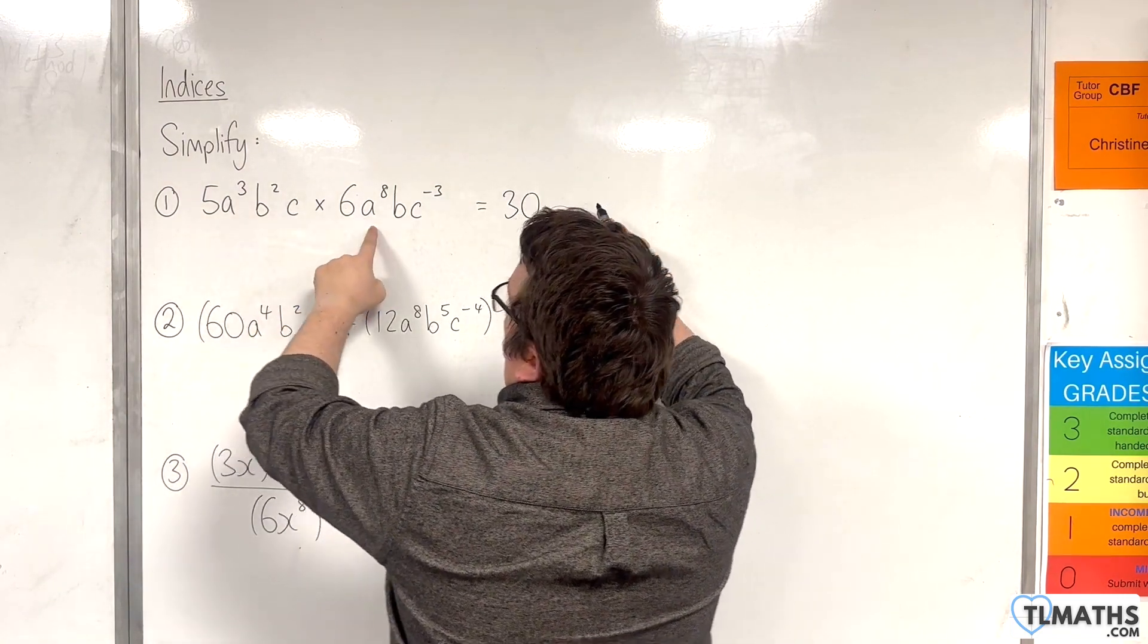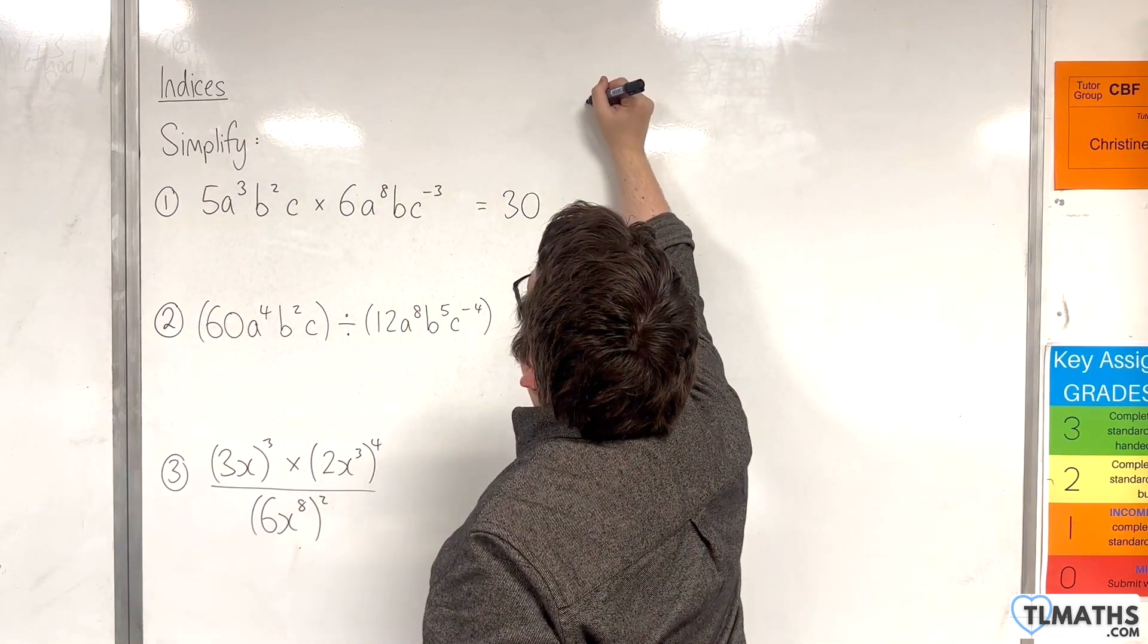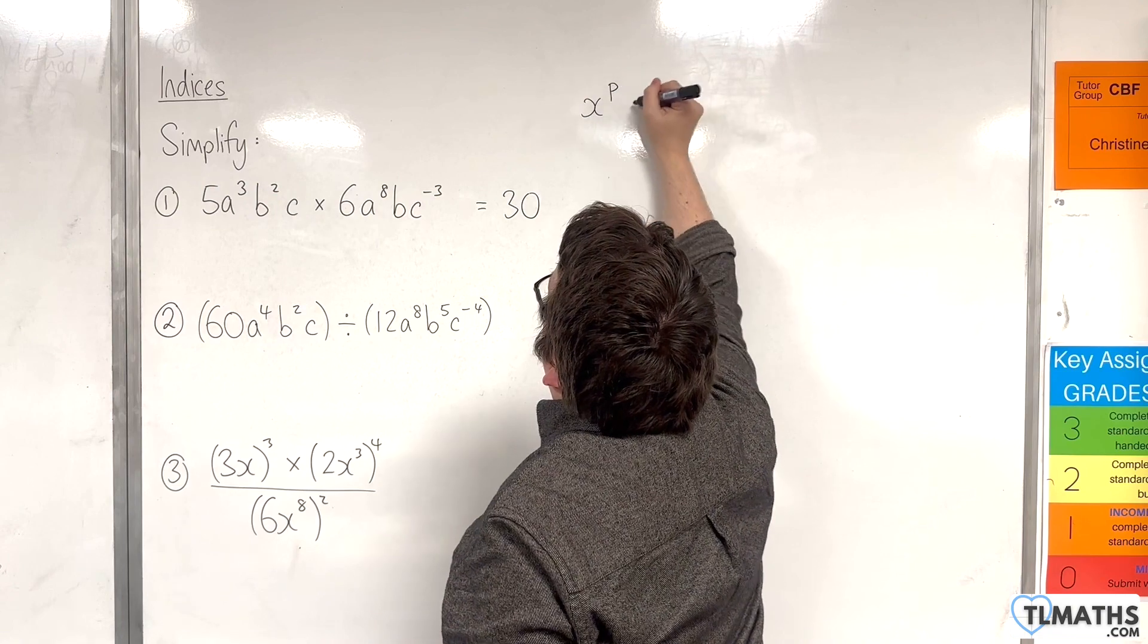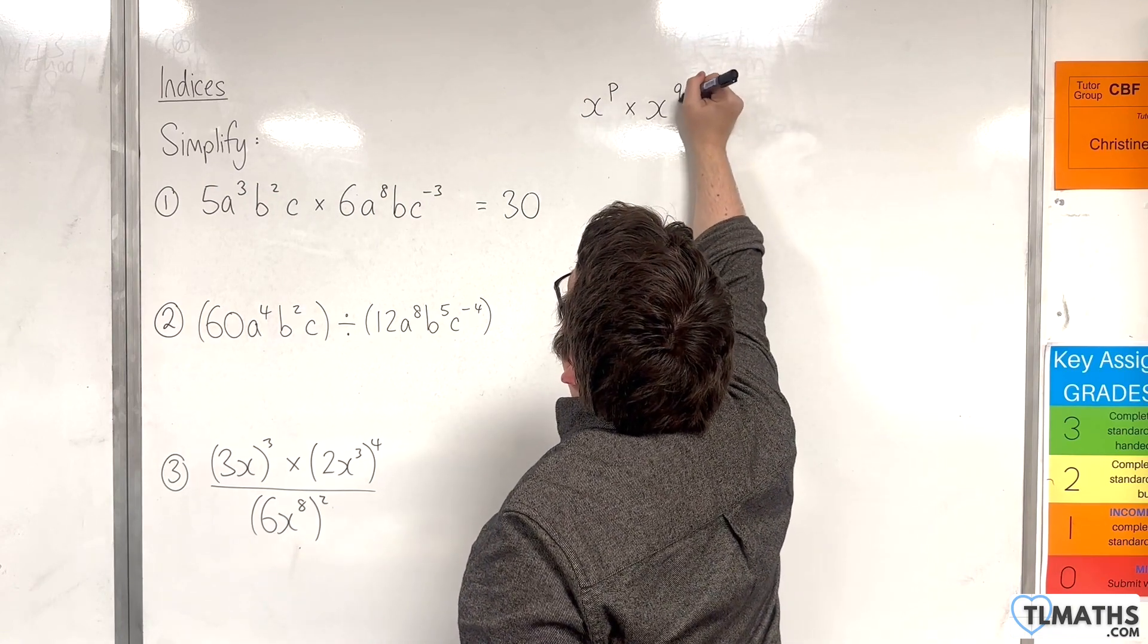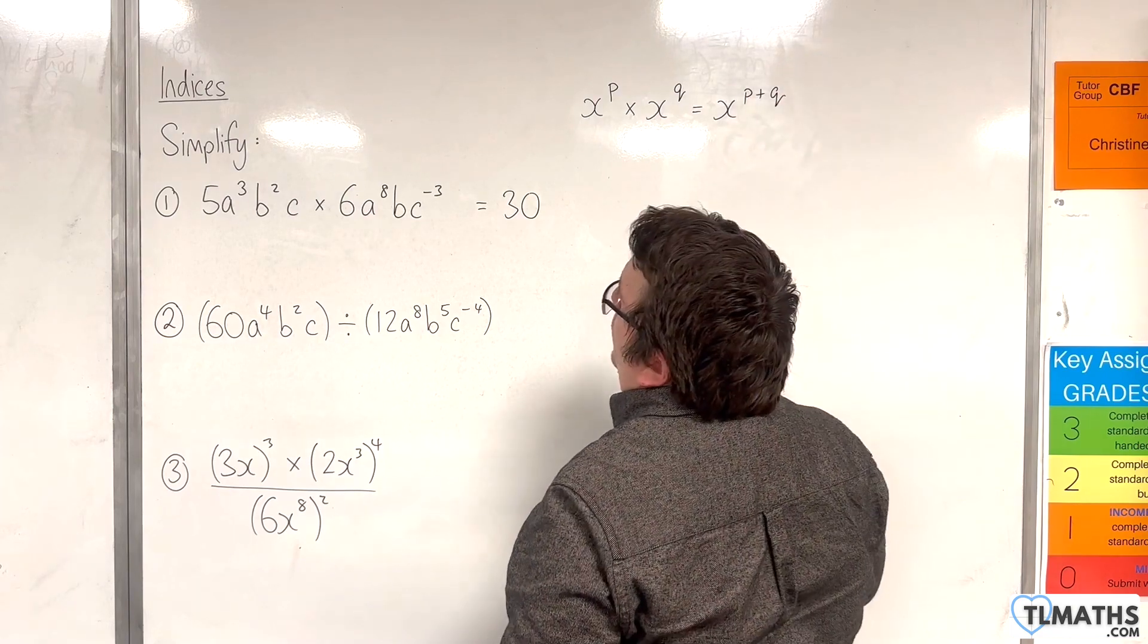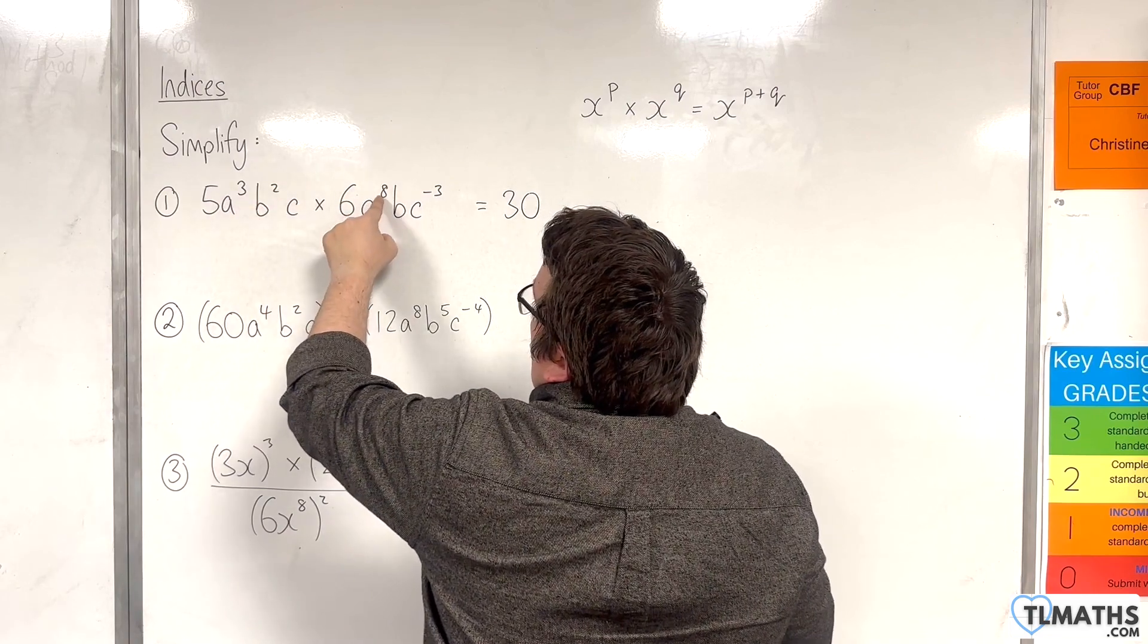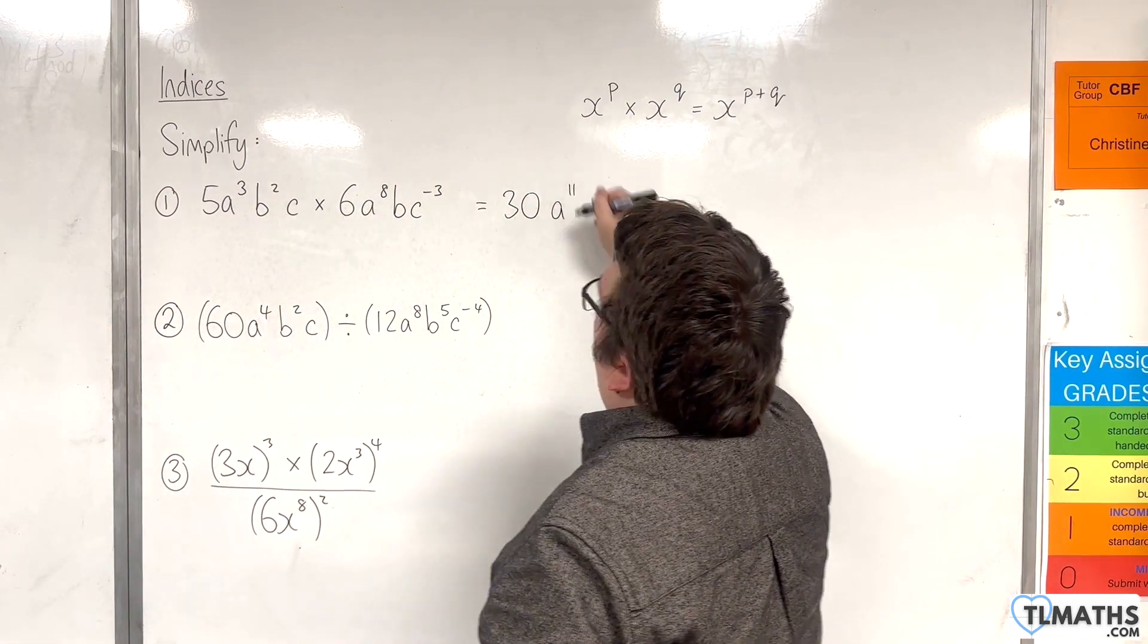We then have a cubed times a to the 8. Now, we have the index law x to the p times x to the q is x to the p plus q. So here we just need to add the indices. We'll have a to the power of 3 plus 8, so that'd be a to the power of 11.